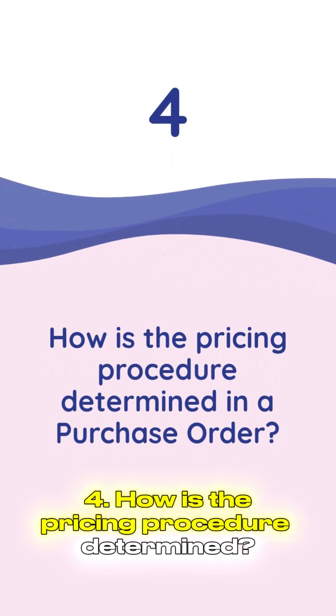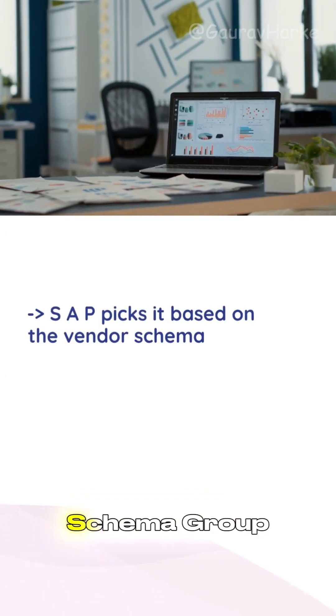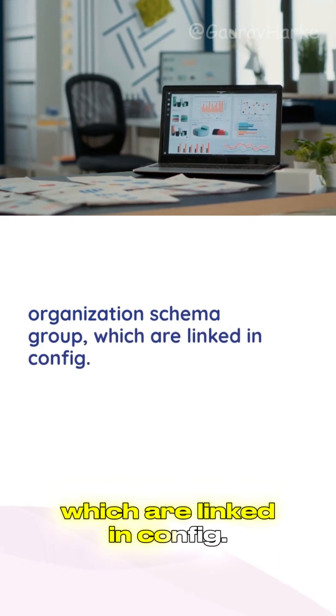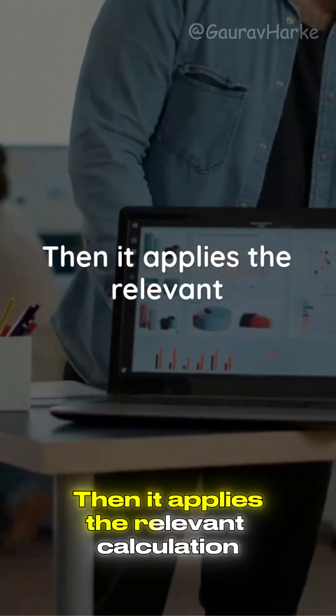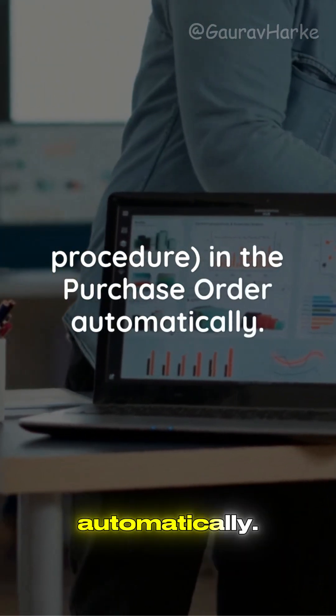Question 4: How is the pricing procedure determined in a purchase order? SAP picks it based on the Vendor Schema Group and Purchasing Organization Schema Group, which are linked in config. Then it applies the relevant calculation schema pricing procedure in the purchase order automatically.